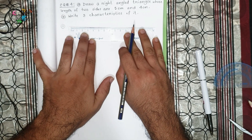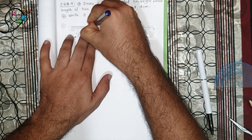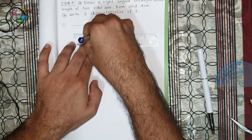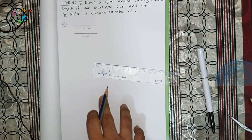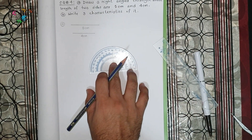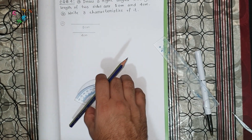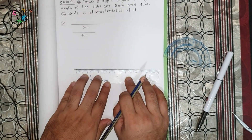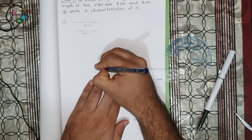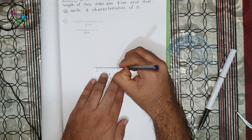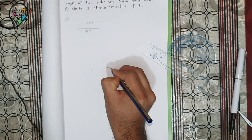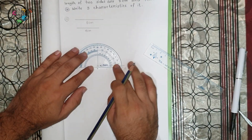Remember this is a right-angled triangle, so we need this protractor to draw a right angle — that means 90 degrees. If an angle is 90 degrees then it is called a right angle. We draw AB as 5 centimeters. Now at point A, using this protractor, we draw a 90-degree angle.